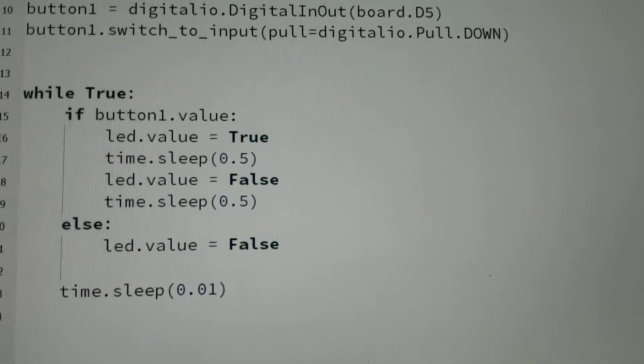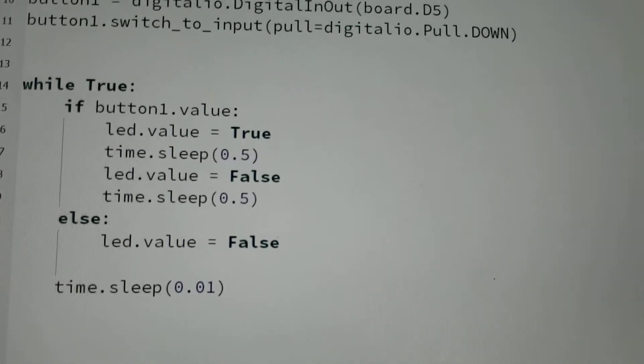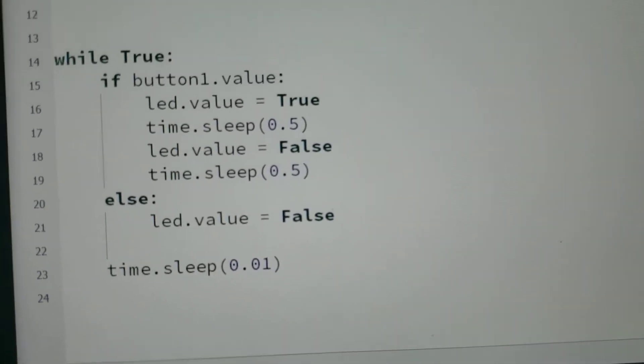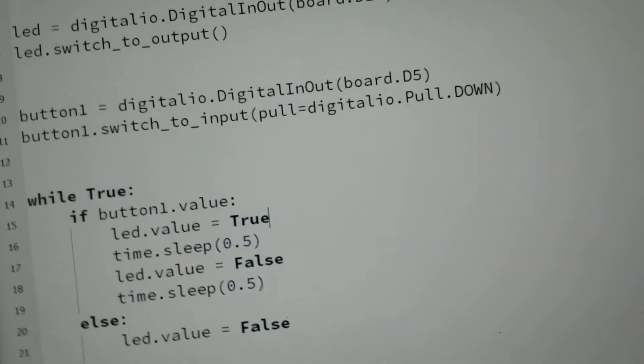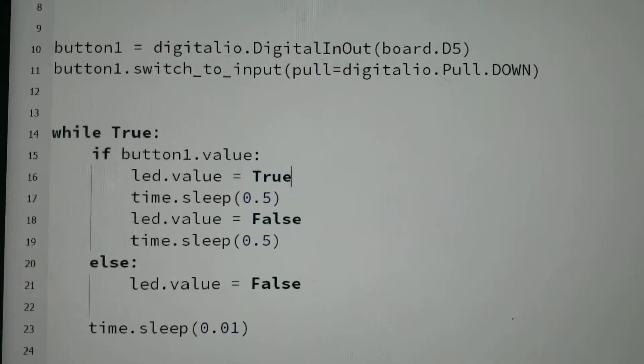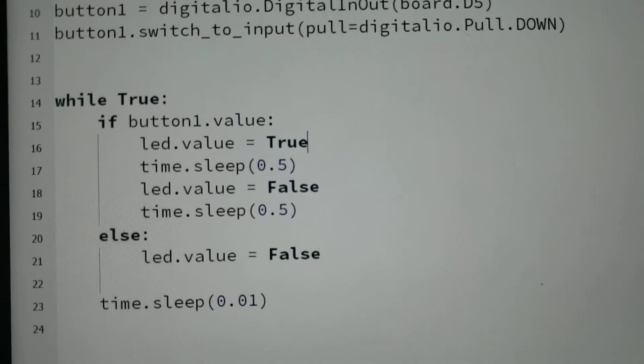and it will essentially turn on for a half second, then go false, and turn on for a half second and loop as long as the button is being held down. So while the button is being held down, the LED will blink at a half second interval.